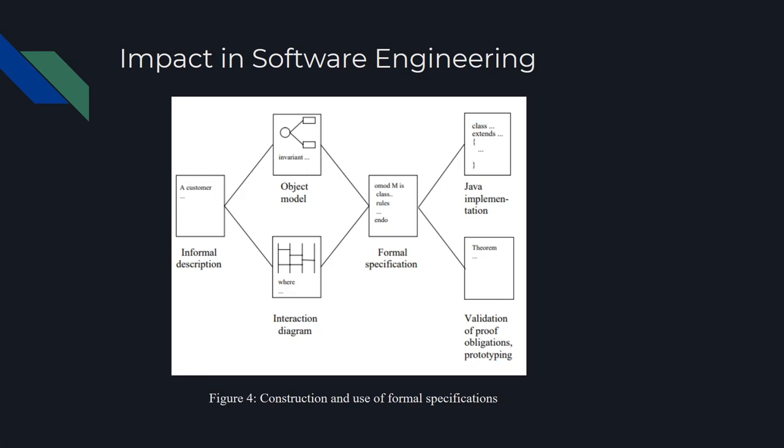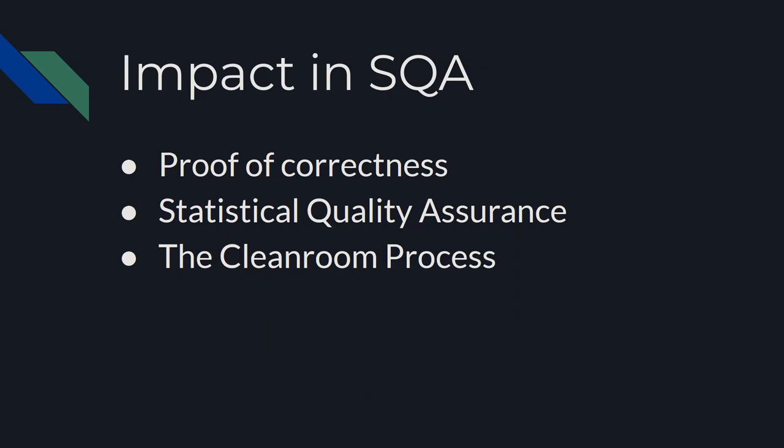In the case of software quality assurance, Ahmed brought forward a few formal approaches to SQA in his 2011 study, which are proof of correctness, statistical quality assurance, and the clean room process.